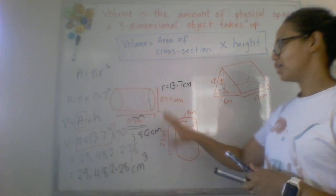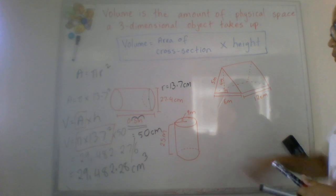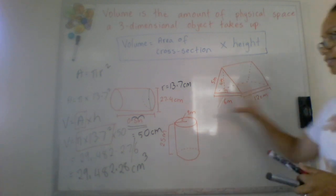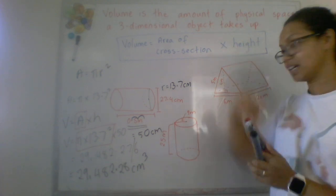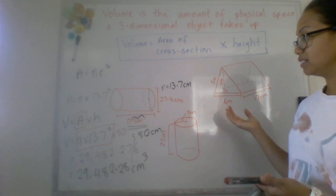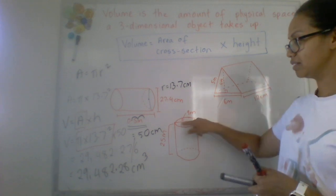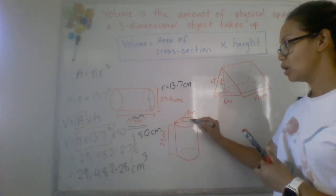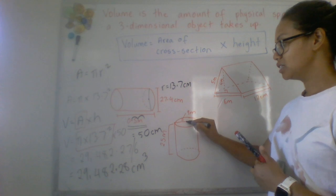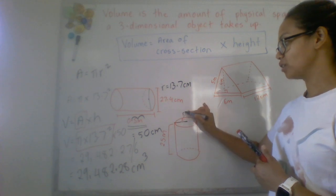We're going to now look at this shape over here, same thing but now we've got it standing up. The only difference apart from its orientation is that we're actually given the radius this time, the center to the outside which means our radius straight away is 9.